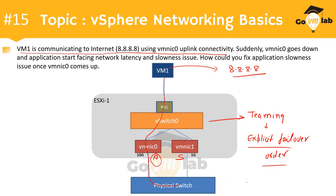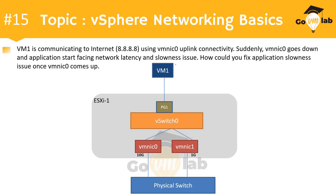The packet is going through VMNIC0 and hitting the external server. Now suddenly VMNIC0 goes down and the application starts facing network latency and slowness issues. The question is: how could you fix the application slowness issue once VMNIC0 comes back up? The problem statement says VM1 is communicating to 8.8.8.8 via VMNIC0, but when this adapter goes down, the application starts facing network latency and slowness issues.